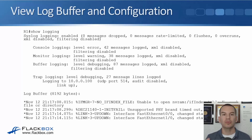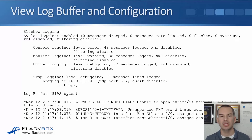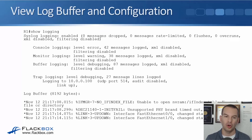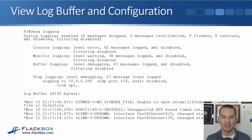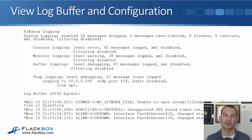Once logging is set up, use the 'show logging' command to view your configuration. You can see here we are logging error severity-level events to the console, warning to the VTY lines, and debugging to the buffer. From that same 'show logging' command, underneath your configuration you'll also see all of the events that are in the buffer — in the example you can see a couple of interfaces coming up at the bottom.